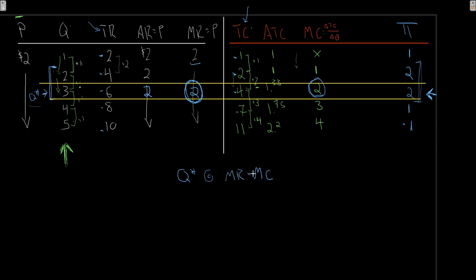The extra revenue earned was identical to the extra cost of that extra unit — and this is our profit-maximizing condition: marginal revenue equals marginal cost. This is the big takeaway: firms exist to maximize profit, and they do so at the margin. Profit is maximized when the extra revenue received for an extra unit equals the extra cost of producing that unit.